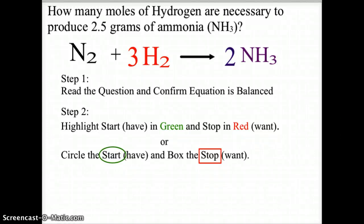Here we have a stoichiometry problem asking us to find how many moles of hydrogen are necessary to produce 2.5 grams of ammonia. So in this case we're dealing with a grams to moles situation, because we are going to start with the 2.5 grams of ammonia and we're looking for how many moles.